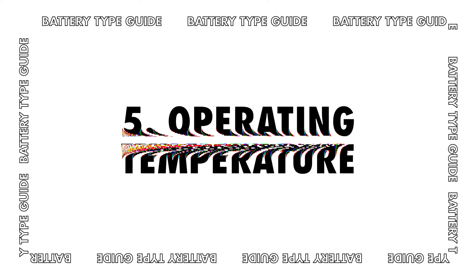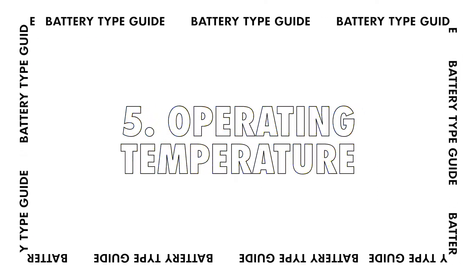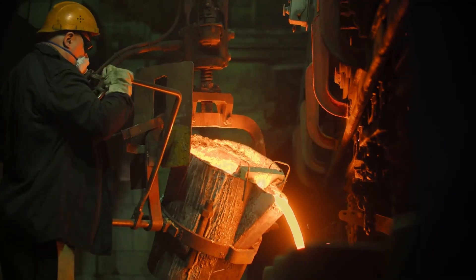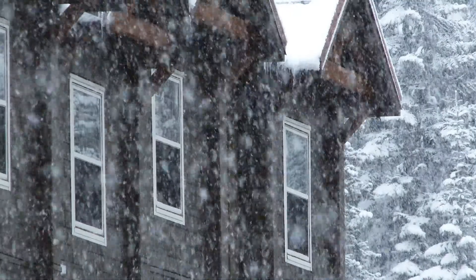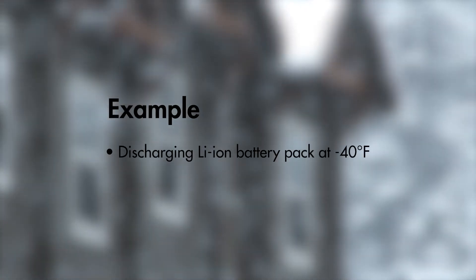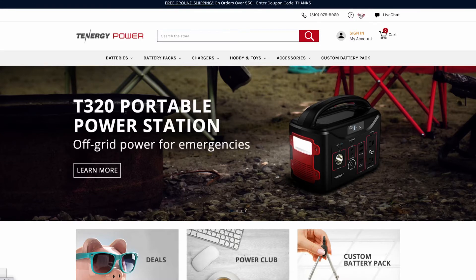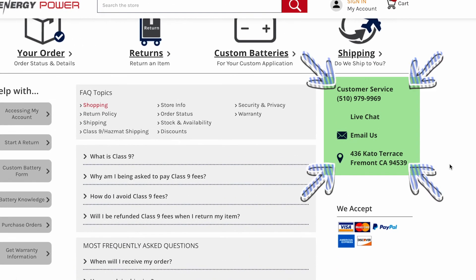The next point is operating temperature. Batteries work best at room temperature, but that's not always the case when used outdoors or in extreme cold or hot weather. If you have a project that requires a special working temperature range — like discharging a lithium ion battery pack at negative 40 degrees Fahrenheit — feel free to contact our customer service for a project review. We can also formulate a special battery cell to work better in extreme temperatures.